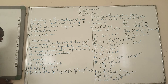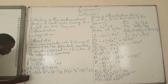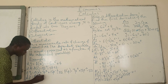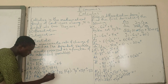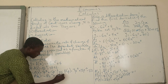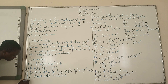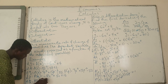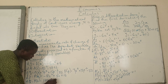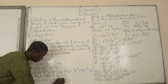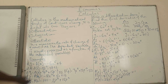For your assignment, attempt these questions. First: y is a function of z, and it gives you minus 18z squared plus 5z plus 13. The second question is: q is a function of p, and it gives you 120 minus one-quarter p raised to power 8 plus 15p raised to power 2. Practice with them and I would appreciate it if you leave your answers in the comments box.